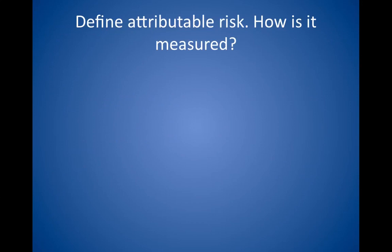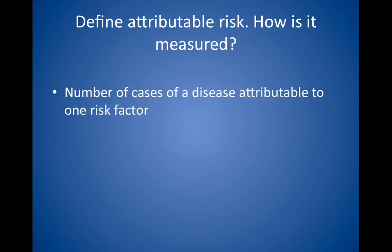Define attributable risk. How is it measured? Attributable risk is the number of cases of a disease attributable to one risk factor — in other words, the amount by which the incidence of a condition is expected to decrease if the risk factor in question is removed. For example, if the incidence rate of lung cancer is 1 out of 100 in the general population and 10 out of 100 in smokers, the attributable risk of smoking in causing lung cancer is 9 out of 100, assuming a properly matched control.